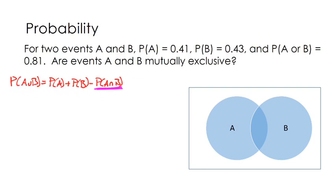We know the probability of A or B is 0.81. The probability of A is 0.41, and the probability of B is 0.43. We're trying to solve to see if there's a non-zero value here, so let's just call that X for now.